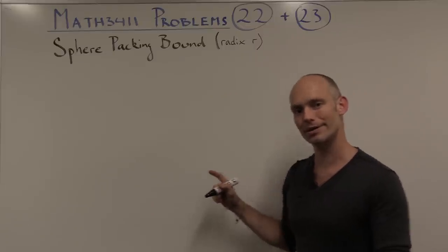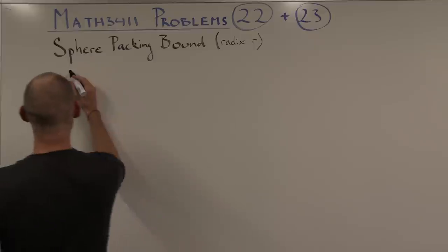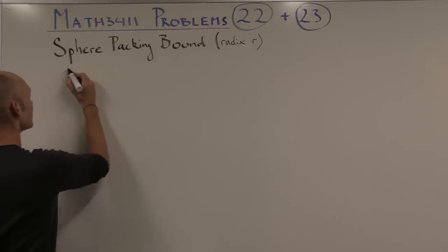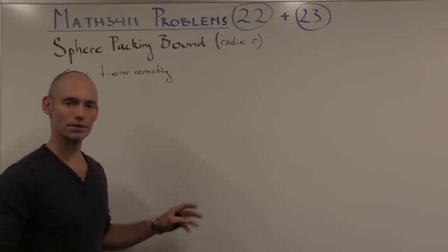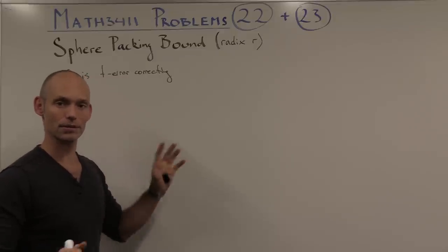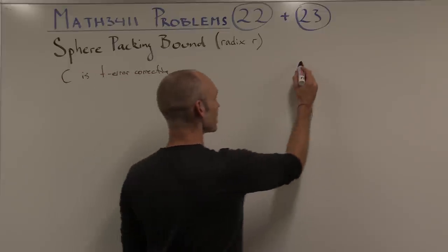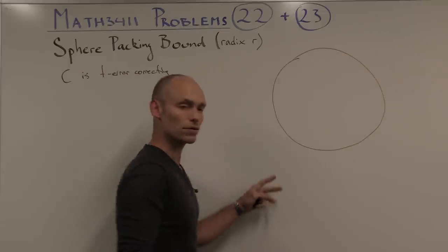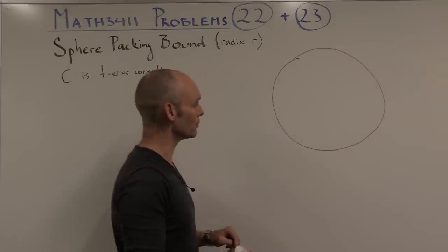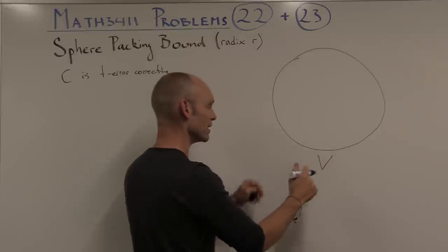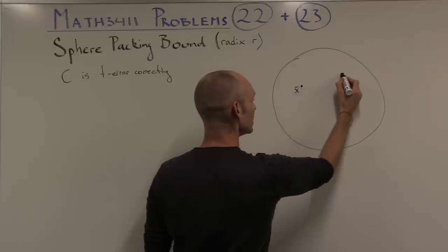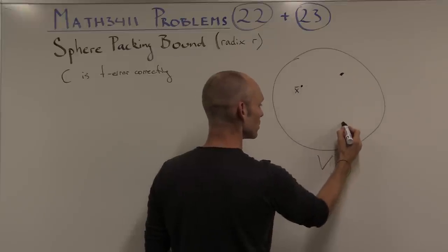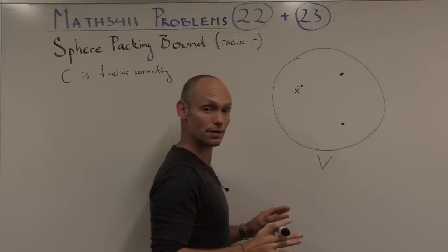Suppose that we have a code c that can correct up to t errors, so c is t error correcting. The way that we can visualize this correction is by looking at the total space of the words that we have, call them V, and then we might have some code words here, some here, some here.